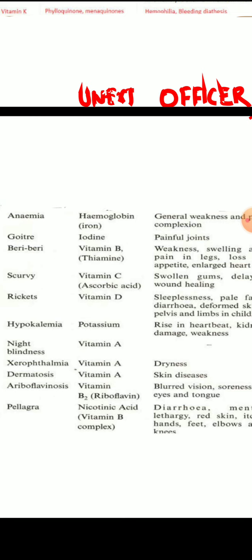For revision: vitamin A deficiency causes a spectrum of disorder called xerophthalmia, which consists of night blindness, Bitot's spots, and keratomalacia. Ariboflavinosis is seen in riboflavin or vitamin B2 deficiency and is characterized by chelosis — dryness or cracking of the lips — and angular stomatitis, which is lesions at the corners of the mouth. Pellagra is due to deficiency of niacin and is characterized by 3D: dermatitis, dementia, and diarrhea.